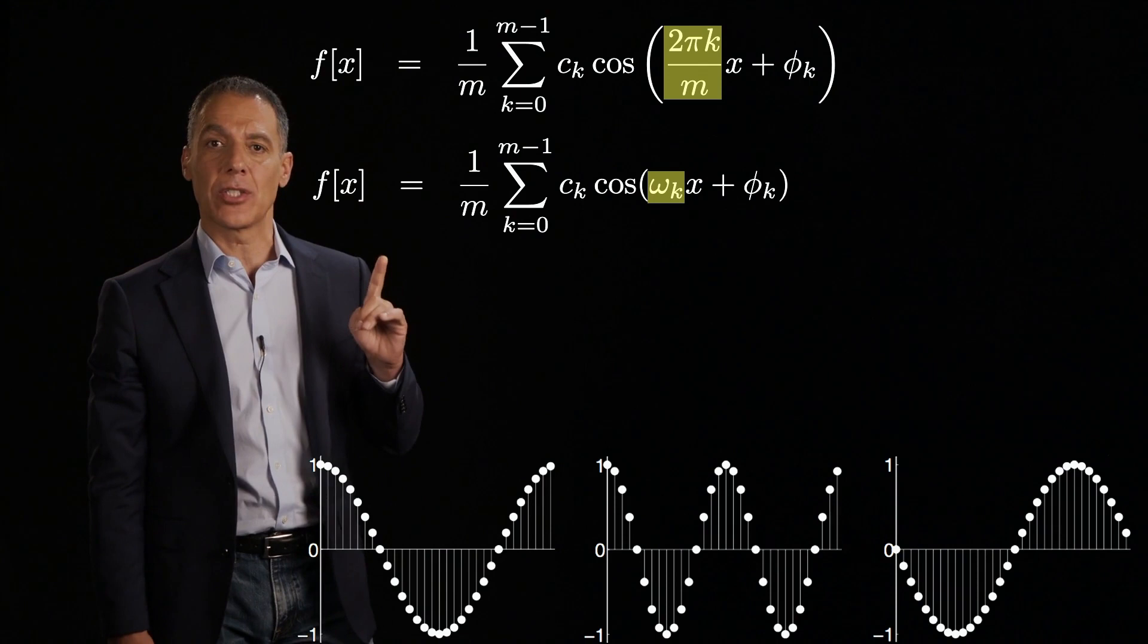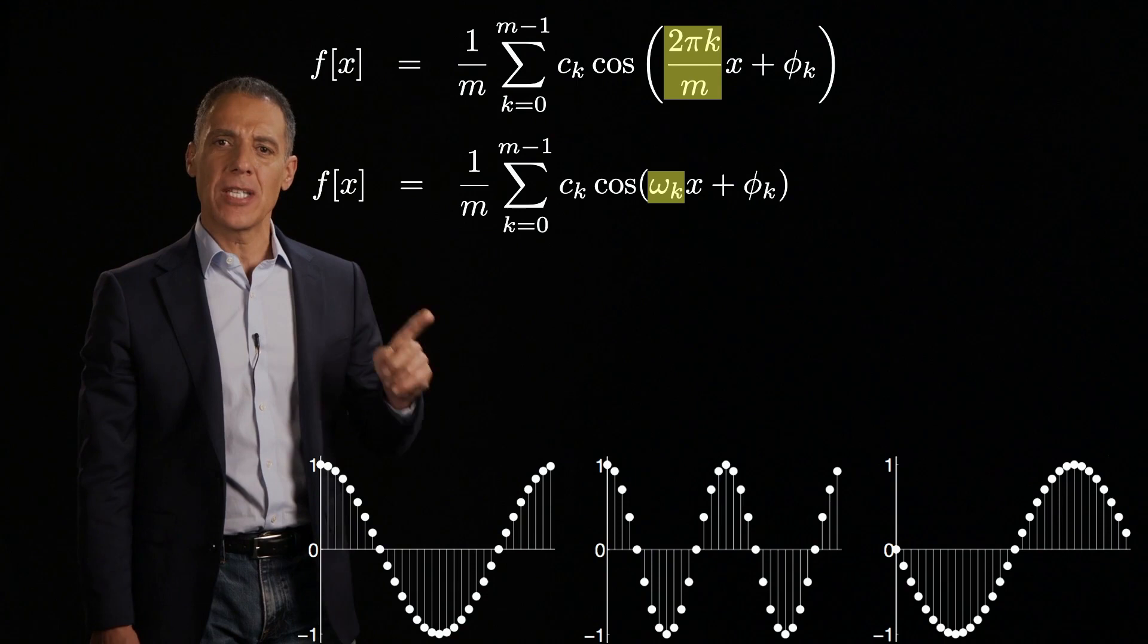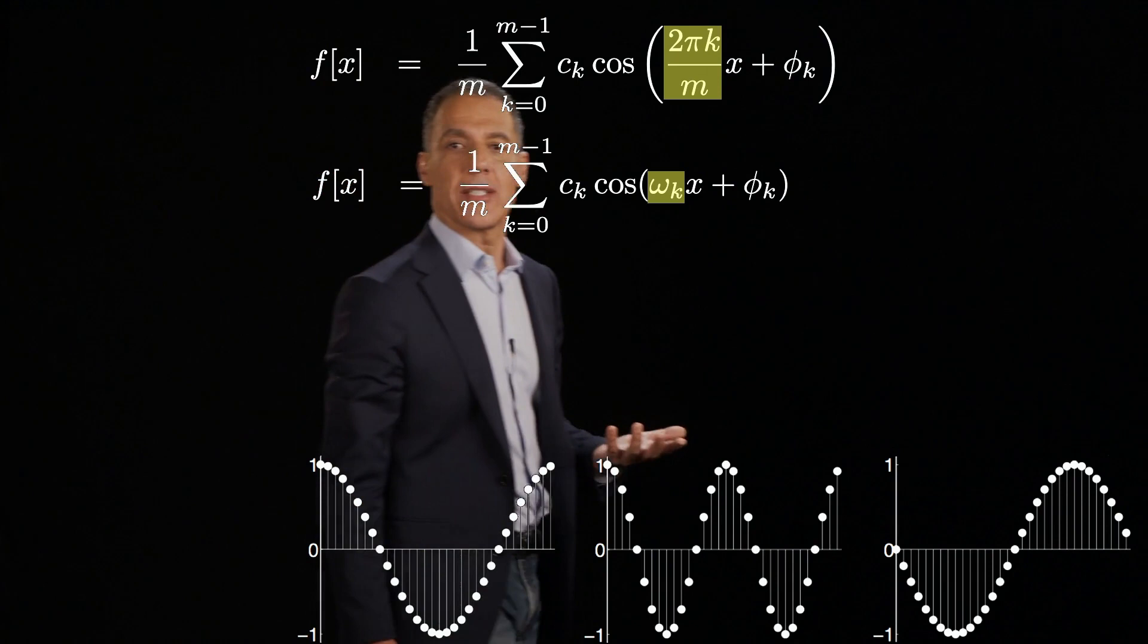Now there's one important catch here, and I should say it right now. In fact, I should have said it earlier, which is we're going to assume that the signal is periodic. Why am I assuming periodicity? Because these cosines are all periodic.